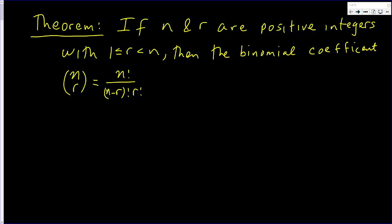In this video I'm going to prove the following theorem: if n and r are both positive integers with r being at least one but less than n, then the binomial coefficient n choose r is an integer.